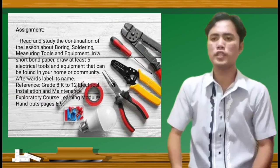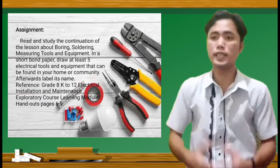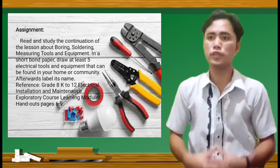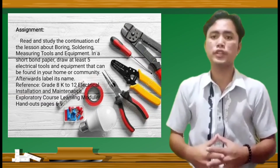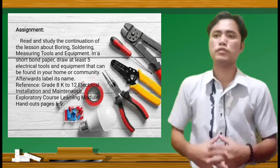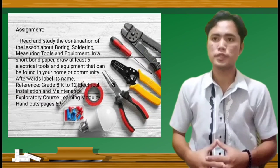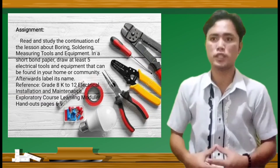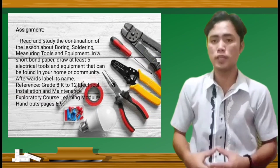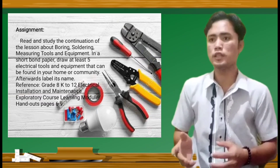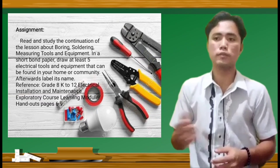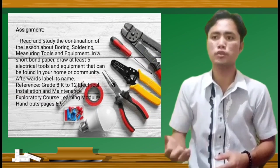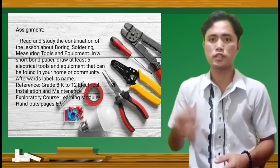So for your assignment, read and study the continuation of the lesson about boring, soldering, measuring tools and equipment. In a short bond paper, draw at least five electrical tools and equipment that can be found in your home or community. Afterwards, label its name. Reference: Grade 8 K to 12 Electrical Installation and Maintenance Exploratory Course Learning Module, handouts page 629.